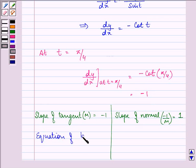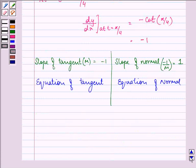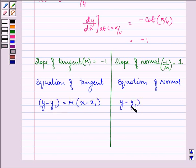Equation of tangent as well as normal will be y minus y1 equal to m x minus x1. Here we have y minus y1 equal to minus 1 upon m x minus x1. Now, we need to have y1 and x1's value.